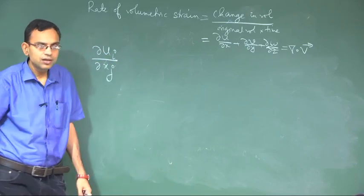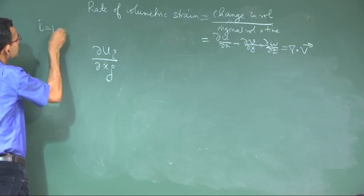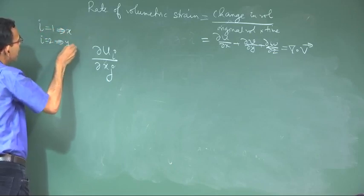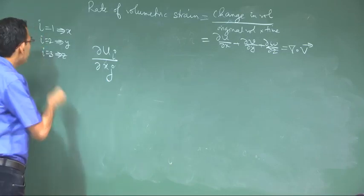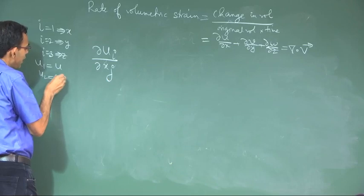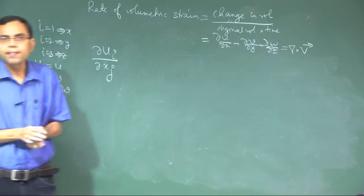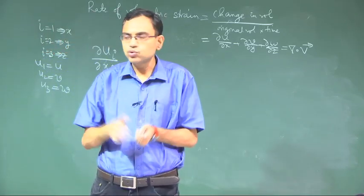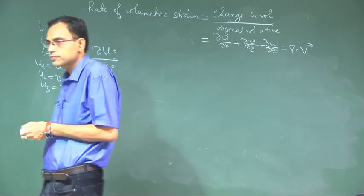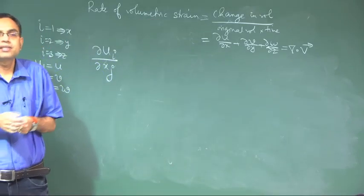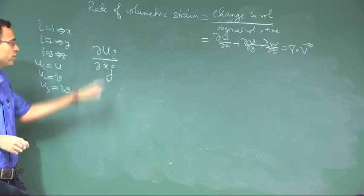This is index notation where i=1 means x, i=2 means y, and i=3 means z. Correspondingly, u1 means u, u2 means v, and u3 means w. This is an alternative compact way to describe all partial derivatives, and this is called the generalized rate of deformation tensor — also a second order tensor requiring two indices for its specification.